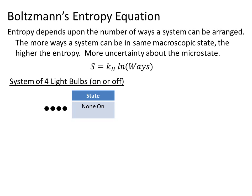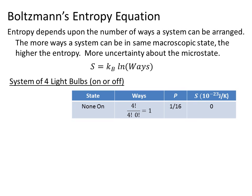Okay well they're all off. And if we count them there's only one way we can do that. So the probability is 1 over 16 because there are 2 to the 4th ways we can have these light bulbs either on or off or somewhere in between. This gives us an entropy of 0 because since there's only one way the natural log of 1 is 0. There's no uncertainty about the microstate of the system when there's no energy in the system. So there's none on.